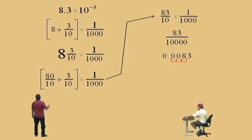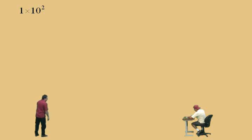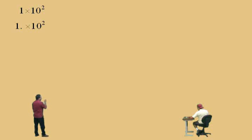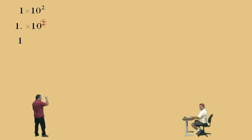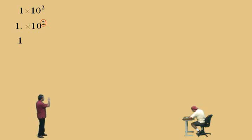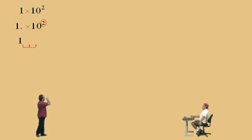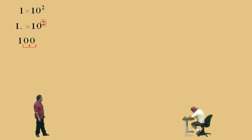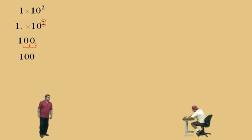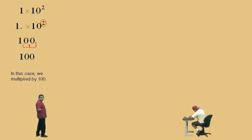For one times ten squared, the decimal is just to the right of the one. We move the decimal to the right two times, because the exponent is positive two. We need to put zeros in there to give us one hundred. Your answer is one hundred — we multiplied by a hundred and moved the decimal to the right two times.